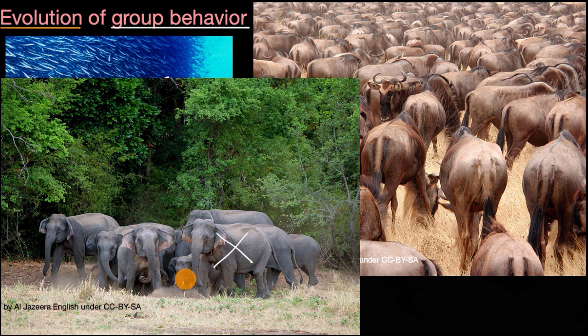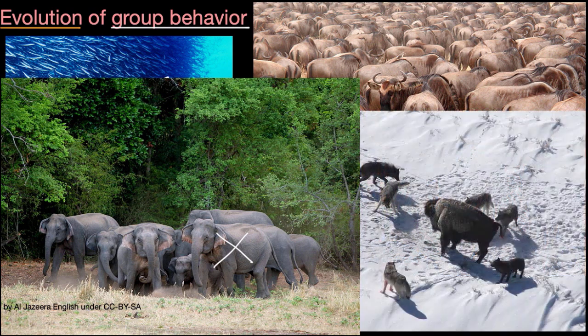You've sometimes heard people say things like, I'd be willing to die for two brothers or eight cousins. And that would actually make sense from a genetic point of view. But it's not just about protection, where we see the evolution of group behavior. We could also see it in terms of predation.